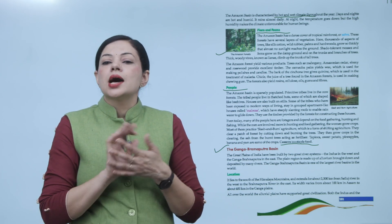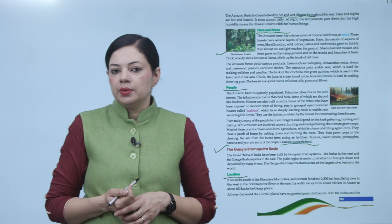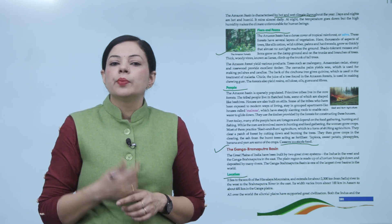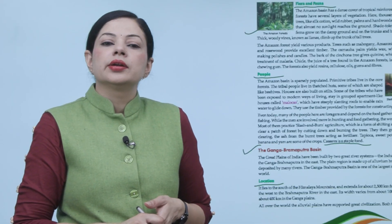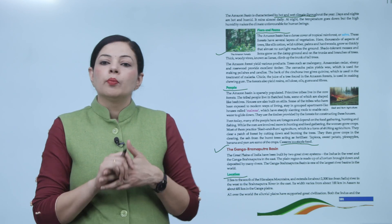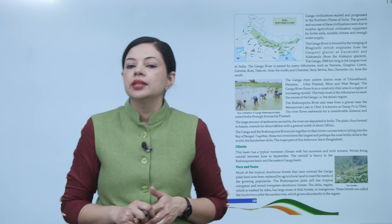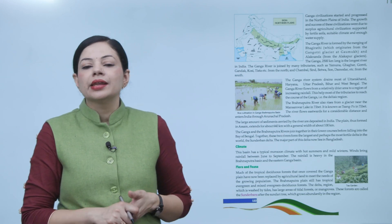The Ganga Brahmaputra basin is one of the largest river basins in the world. It lies to the south of the Himalaya mountains and extends for about 2500 km from the Sutlej river in the west to the Brahmaputra river in the east. Its width varies from about 100 km in Assam to about 400 km in the Ganga plains. The alluvial plains have supported great civilizations all over the world. Both the Indus and the Ganga civilizations started and progressed in the northern plains of India. The growth and success of these civilizations were due to surplus agricultural production supported by fertile soil, suitable climate and enough water supply.